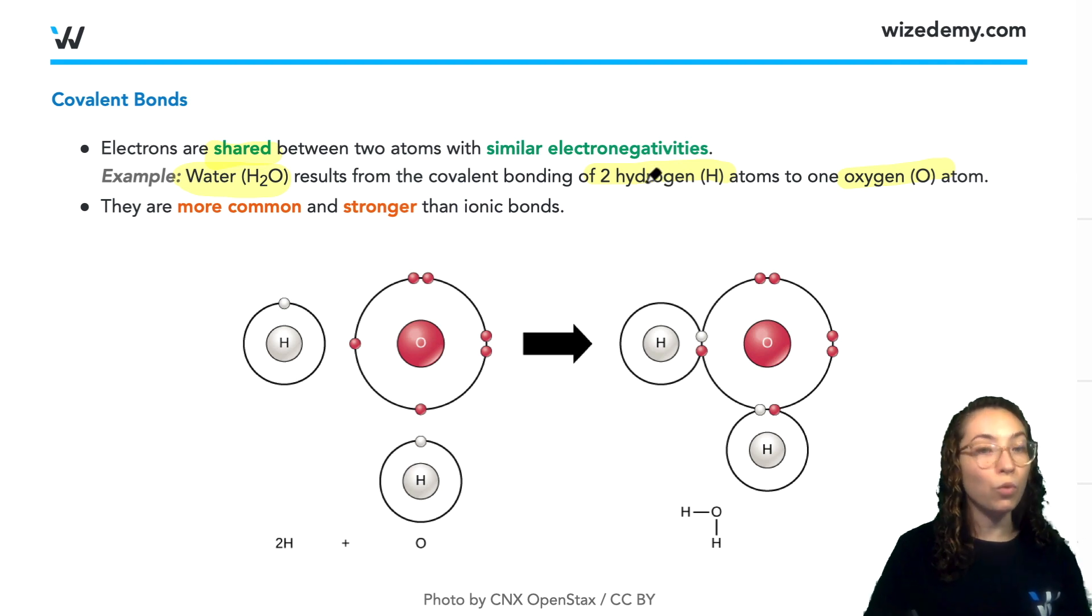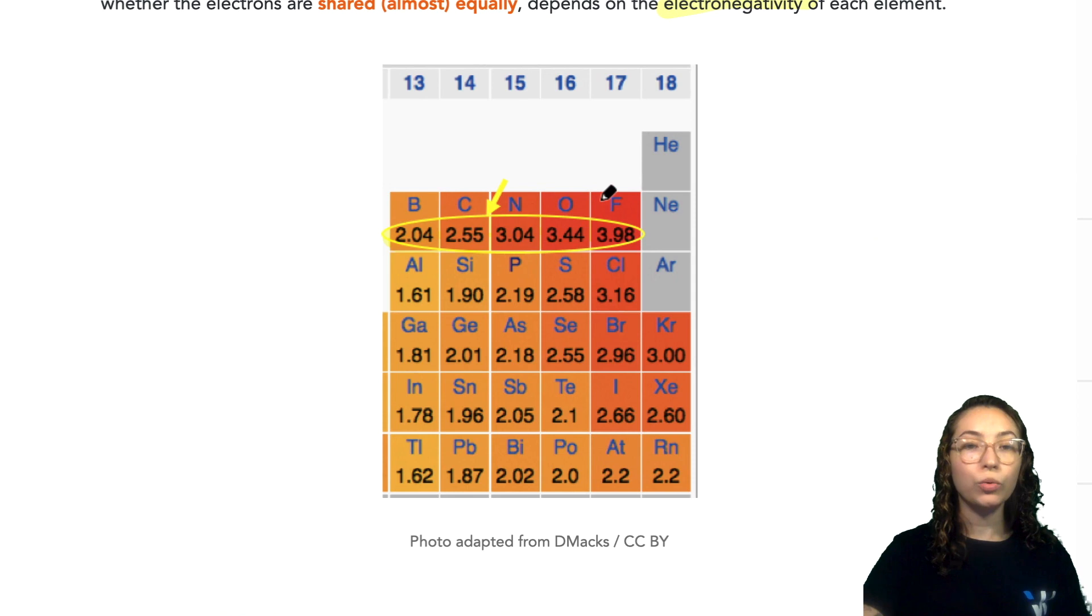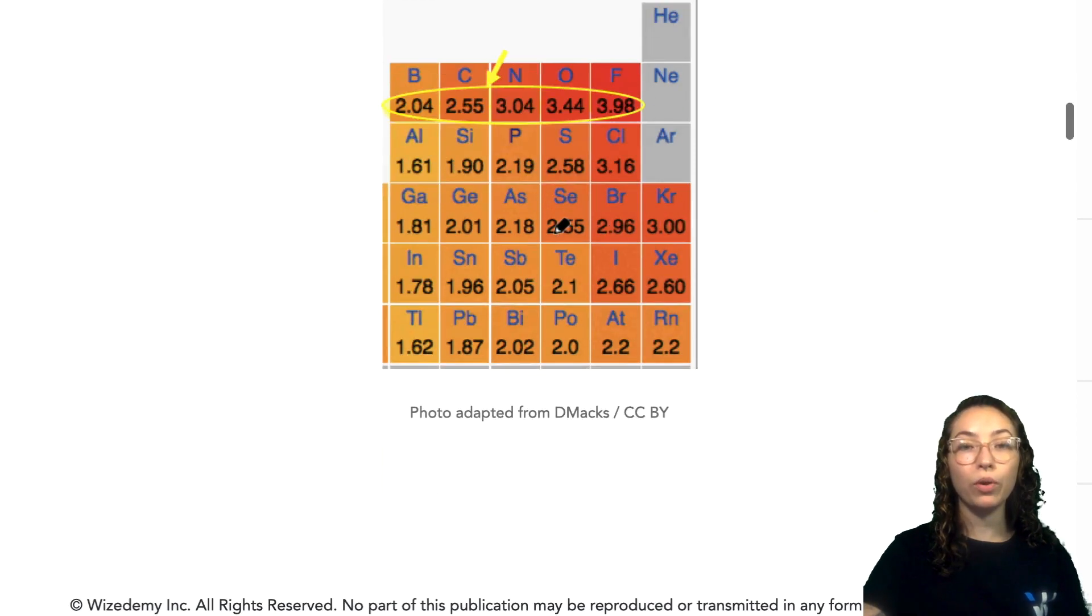So these types of bonds are more common and stronger than another bond type that we'll discuss in a bit called ionic bonds. Just so you have an idea, the electronegativity of hydrogen is about 2.2, and if you look up here at the periodic table you will see that the electronegativity of oxygen is about 3.44.